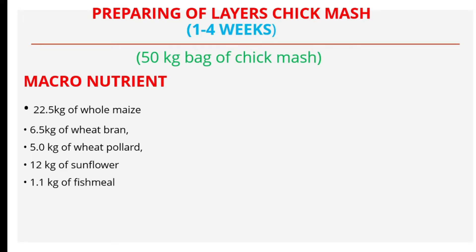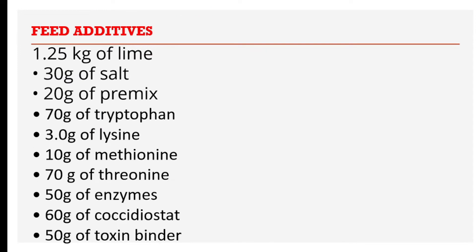You also add 6.5 kg of wheat bran and 5.0 kg of wheat pollen. Wheat pollen is an extract from protein stored as granules in the wheat seed — it is a byproduct of flour milling and is different from wheat bran. If it is available in your area, it is very important to add it during formulation. Then add 12 kg of sunflower and 1.1 kg of fish meal.